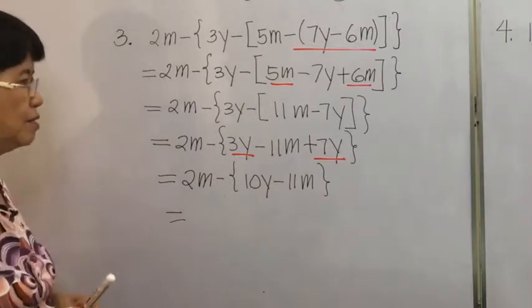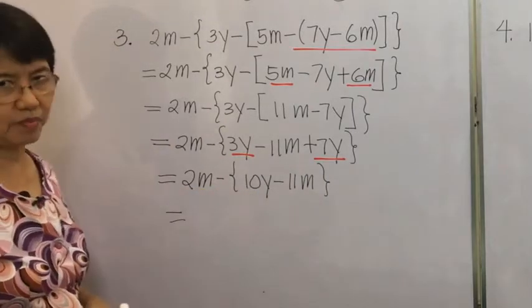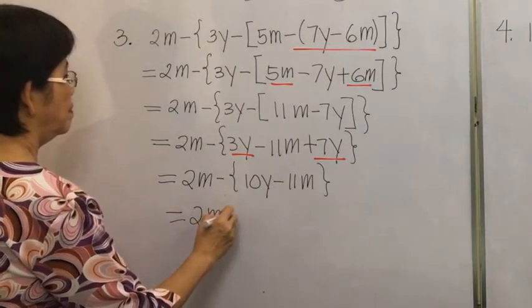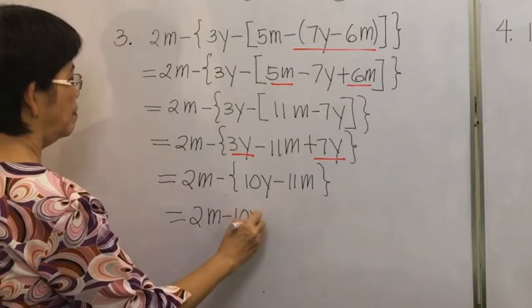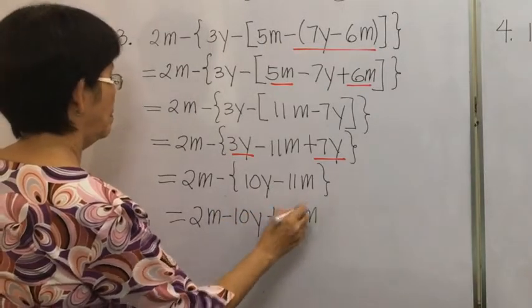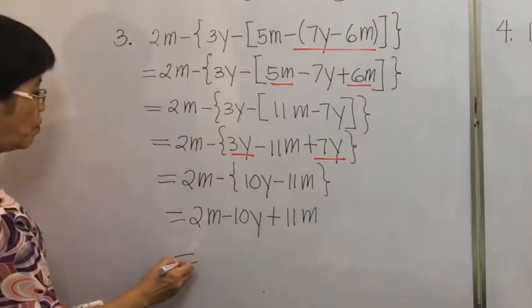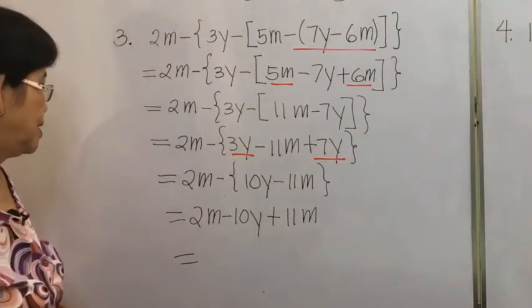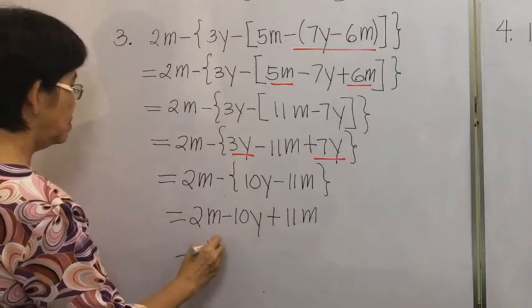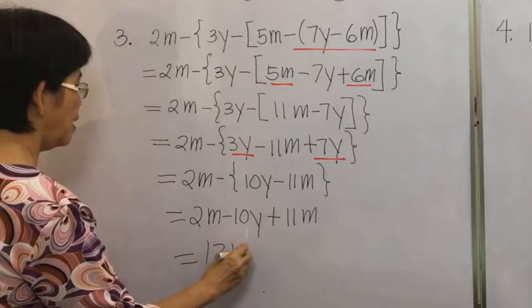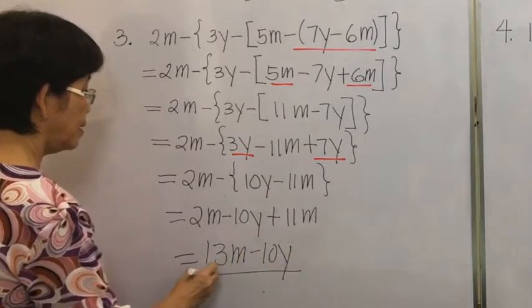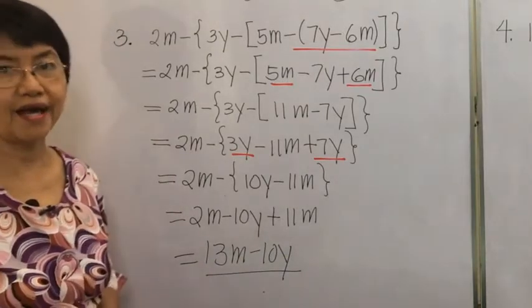Lastly, we remove the braces and combine similar terms. We have 11M plus 2M, giving 13M minus 10Y. And this is our final answer for example 3.